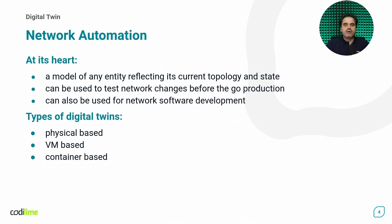A crucial part of network automation is the digital twin. A digital twin at its heart is either a full mirror or at least a good model of a production network that will be used as a testbed for planned network or configuration changes, or a place where we can test our scripts before they are used in a production environment.